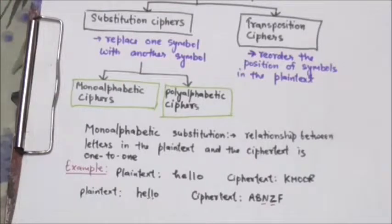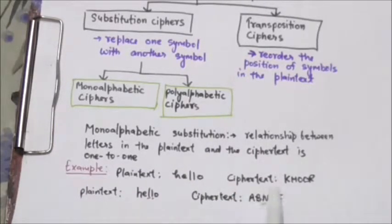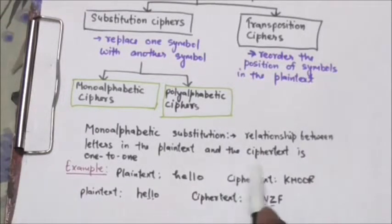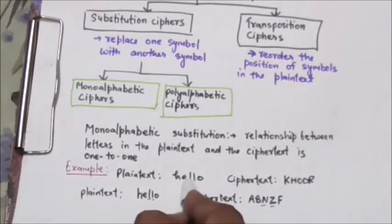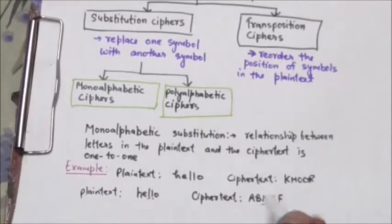For example, suppose we have a plain text H E L L O and its corresponding cipher text is K H O O R. This cipher is mono alphabetic because both L's in the plain text are both encrypted to O.